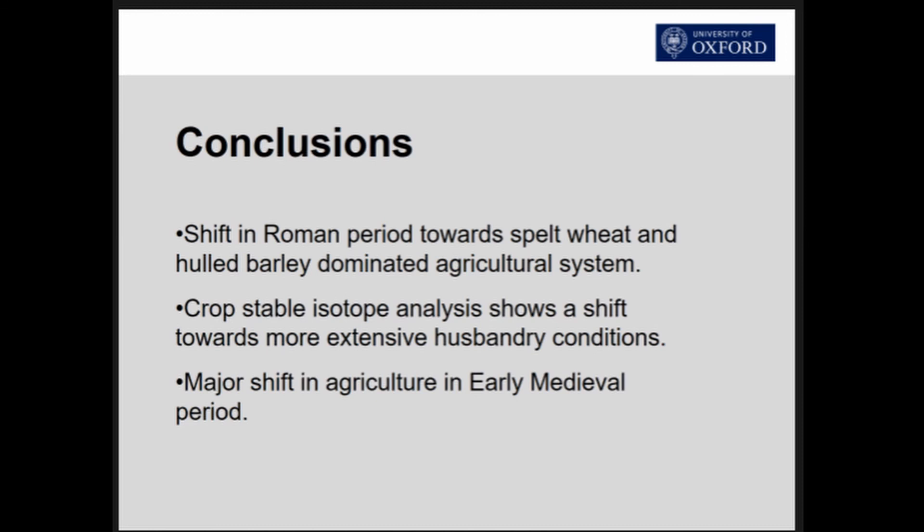To conclude: we clearly have a shift towards a Roman period farming system based on spelt wheat and hulled barley treated very similarly. The application of crop stable isotope analysis has shown that we do see a shift towards more extensive husbandry conditions in the late Roman period.